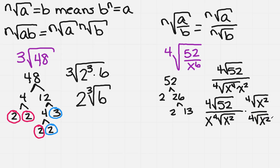I'm going to multiply the top and the bottom by the 4th root of x squared. So when I do that, on top, this was already not to a 4th power, so I can put those back underneath. And I'm going to have the 4th root of 52x squared.